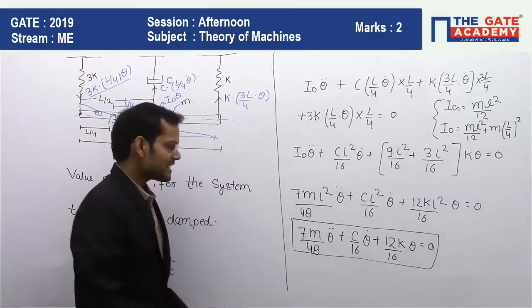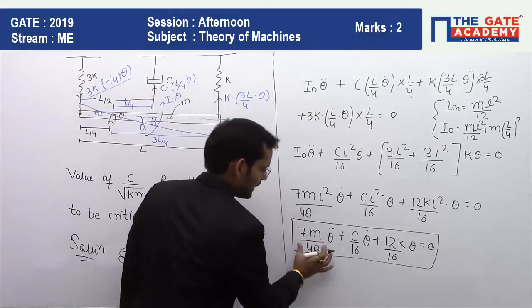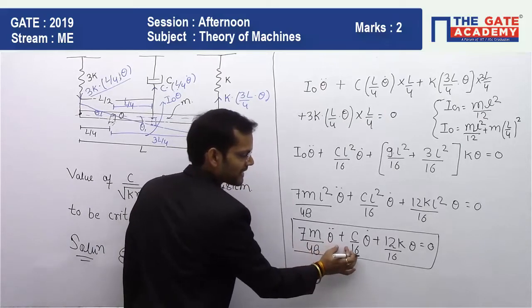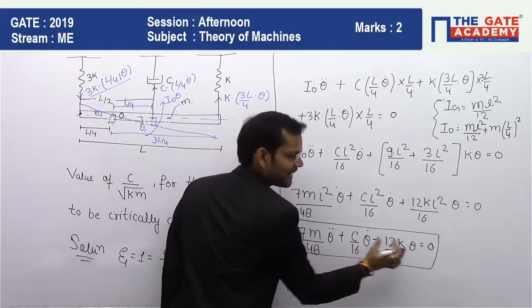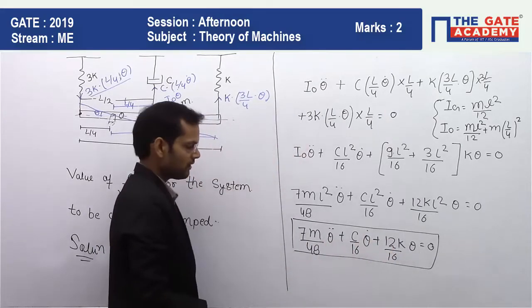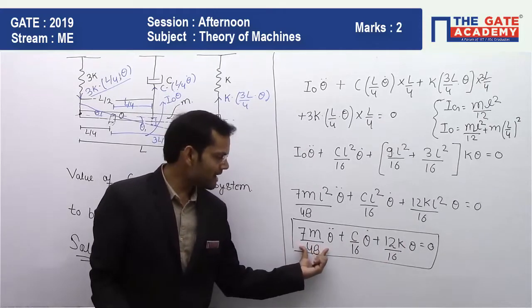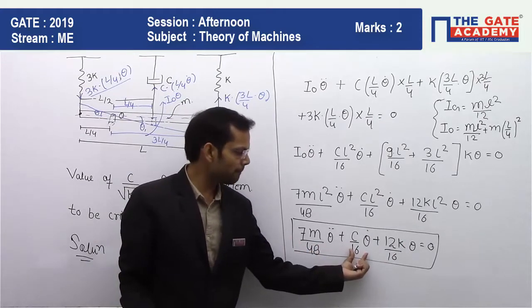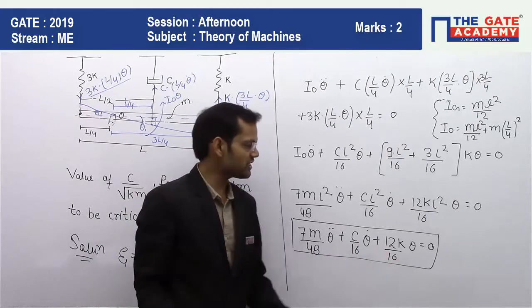Comparing with the standard form m_eff·ẍ + c_eff·ẋ + k_eff·x = 0: the effective mass is 7m/48, the effective damping coefficient is C/16, and the effective stiffness is 12k/16 = 3k/4. We now need to find the value of C/√(KM) for which the system is critically damped.